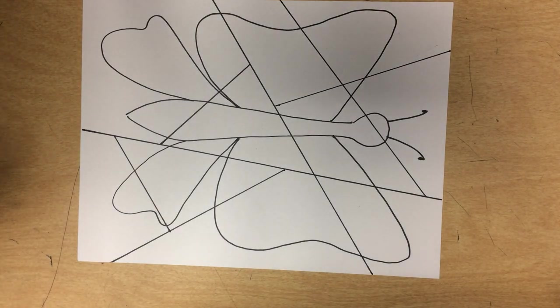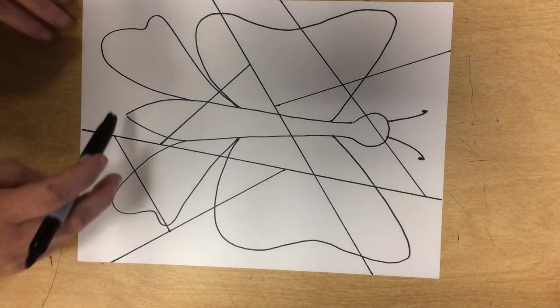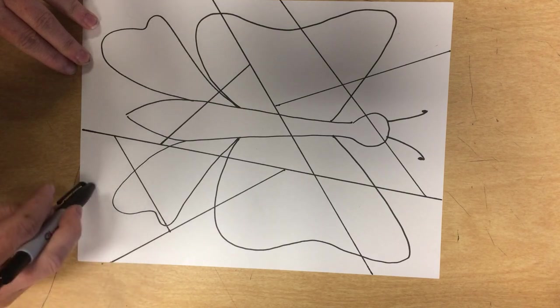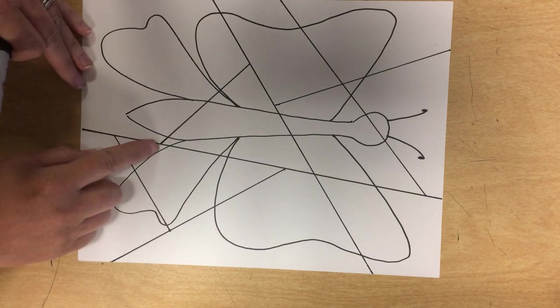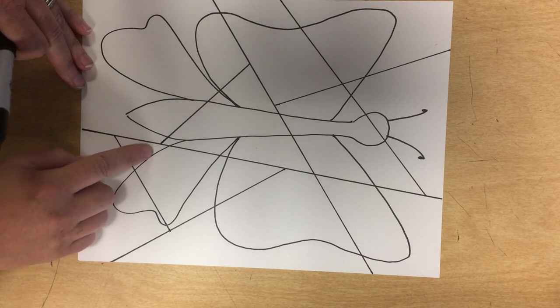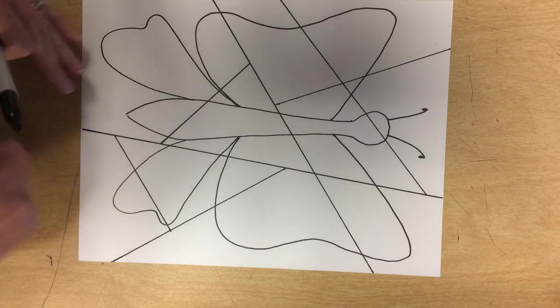What I'm going to do next is I'm going to make different patterns in each part of each section. So I'm going to make a pattern in this section right here, and then I'm going to stop when I hit another line.